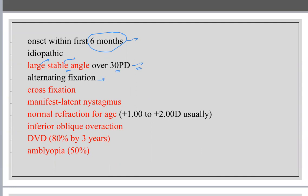I have alternating fixation or alternating strabismus — sometimes the right eye deviates, sometimes the left. Cross-fixation occurs especially in large angles, meaning the right eye sees the left field and the left eye sees the right field. If the angle is very large, the right eye sees the left part of the visual field and vice versa.